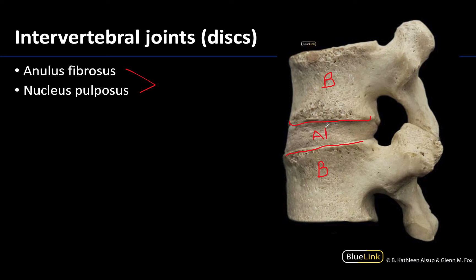You will have the annulus fibrosis, which is the outer layer that we can see here. We're not able to see the nucleus pulposus because that is located in the inner portion of the intervertebral disc. The annulus fibrosis is composed of fibrocartilage and serves as the more protective outer layer. The nucleus pulposus on the inside is a semi-fluid layer which has the possibility of herniating through the annulus fibrosis, potentially causing impingement on spinal nerves exiting those regions.